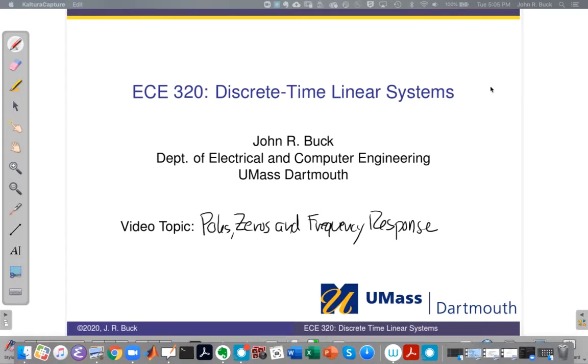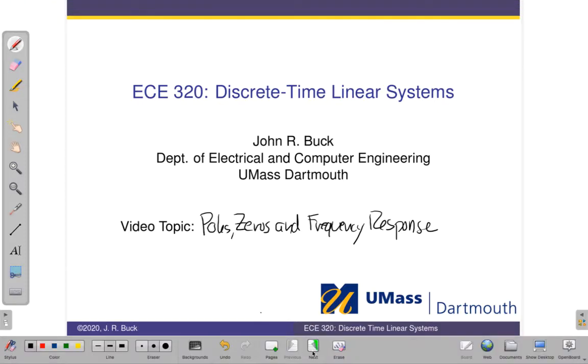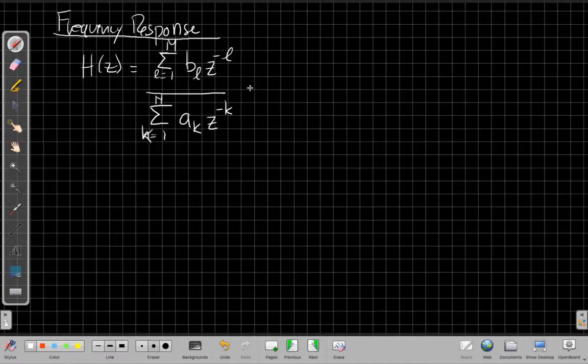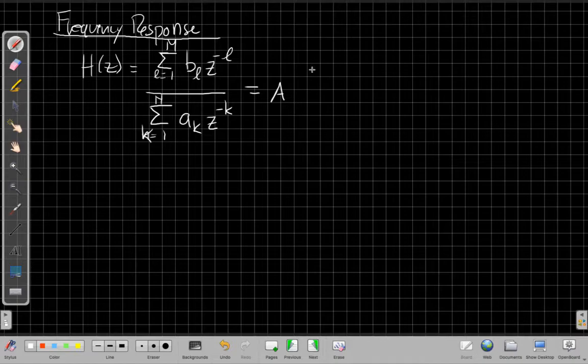So again, our topic for this video is poles, zeros, and the frequency response and how they're connected. If we start with a classic rational system, it has the frequency response that looks like this. But we know if I want to find poles and zeros, I need to factor it. And when I factor it, a polynomial, I'm writing it as a product of a whole bunch of terms. I may have a constant gain in front, but instead of a sum, we often write this with a capital pi for product.